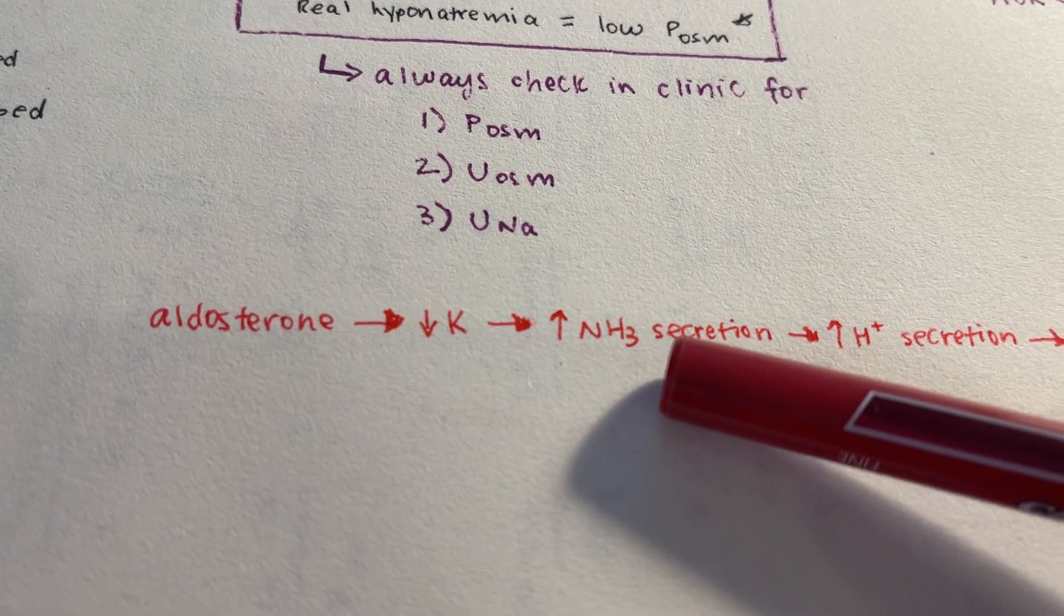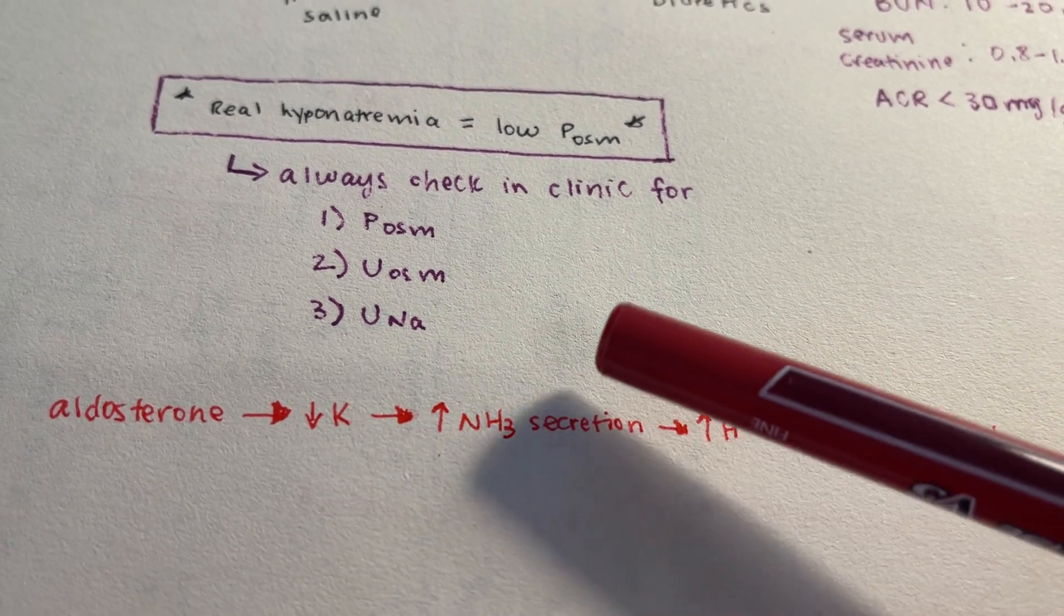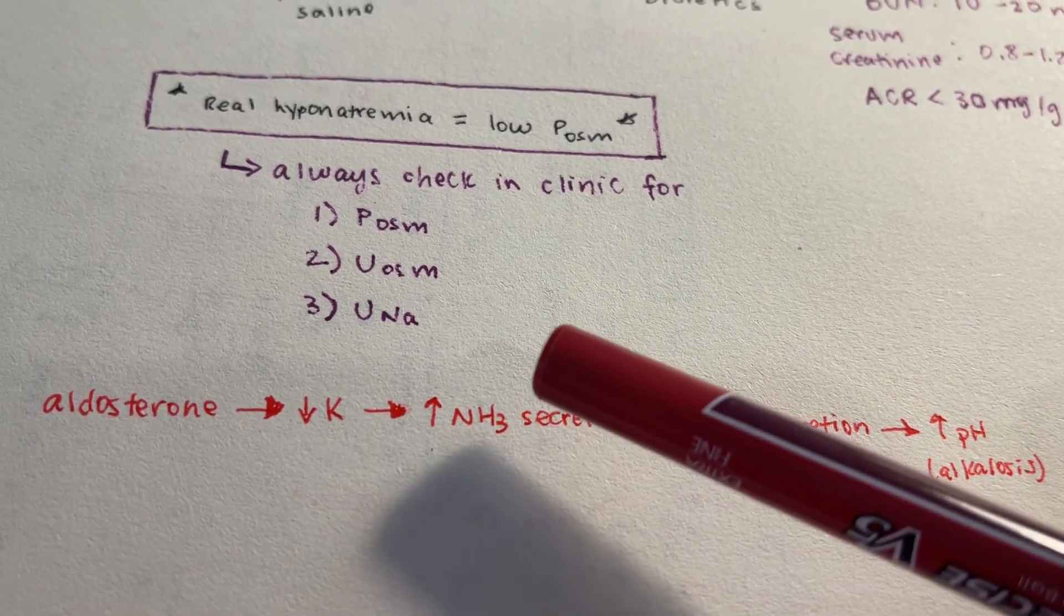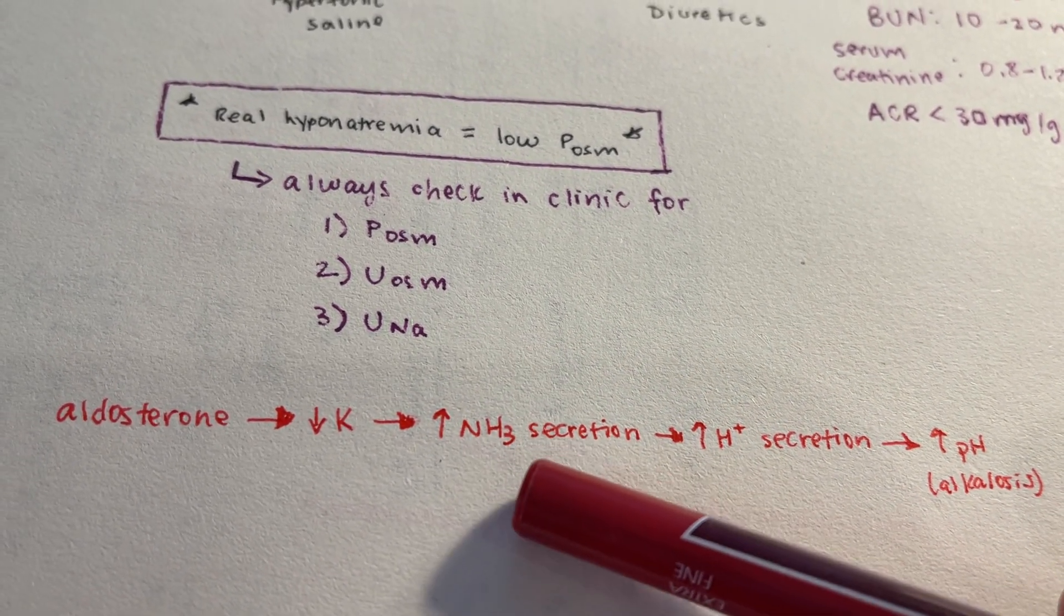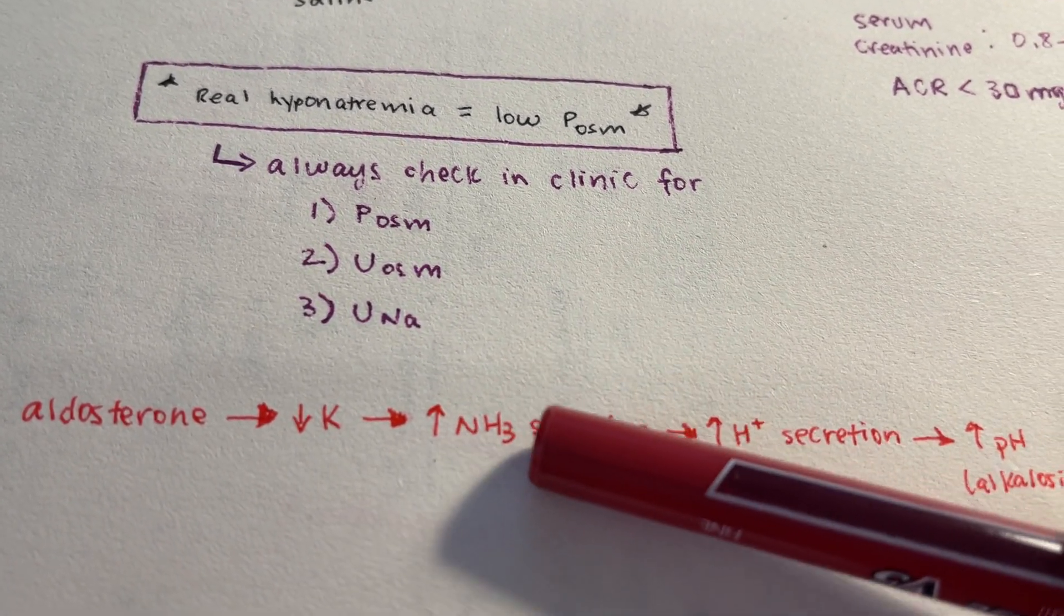And that will then be secreted into your urine, or into the filtrate. So you're going to have a lot of NH3 now in your filtrate that will become urine, and if you have a lot of NH3 secreted into the lumen of your kidney, of your nephron.